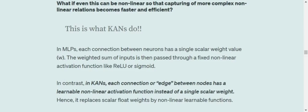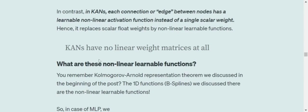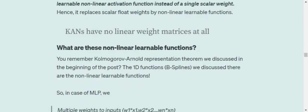So instead of having a scalar weight that we multiply with the inputs, KANs have learnable non-linear activation functions. So that is the only difference that we have between the MLP and KANs. What are these non-linear learnable functions? Basically, the B-spline functions that we talked earlier are the non-linear learnable functions.